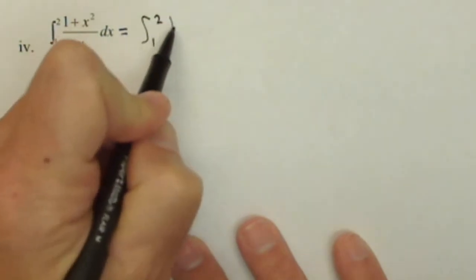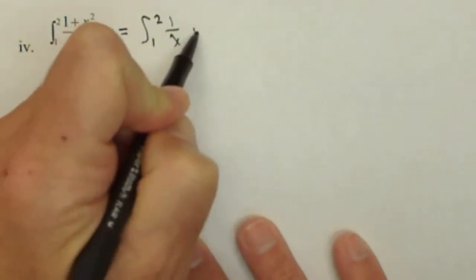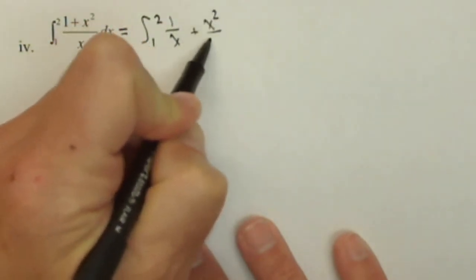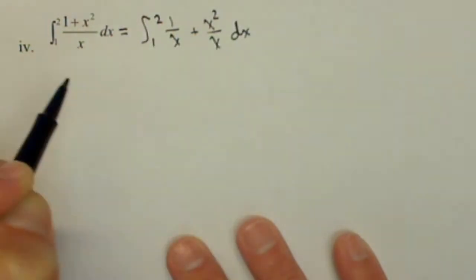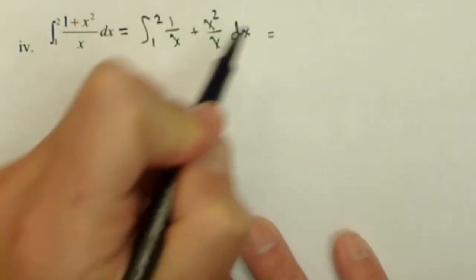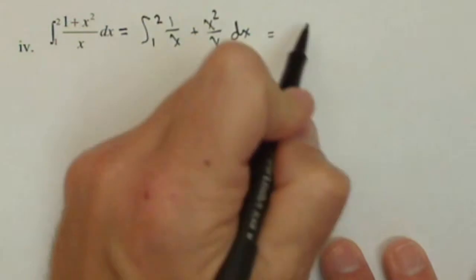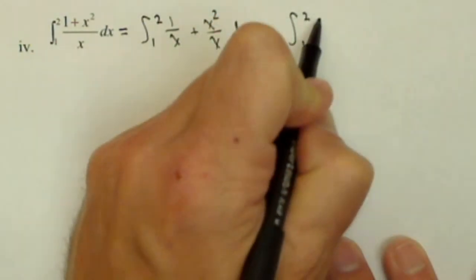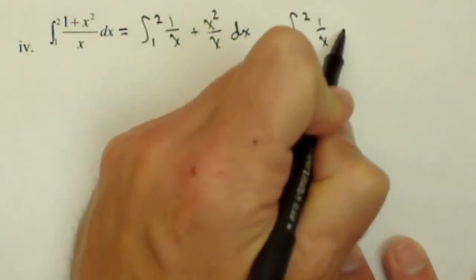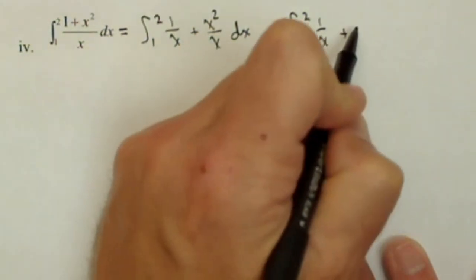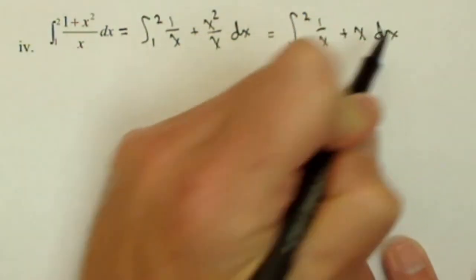So we're going from one to two, and we can write this as one over x plus x squared over x dx, which we can simplify a little bit further here. We're going to have one to two of one over x plus x squared over x, which simplifies down to x dx.